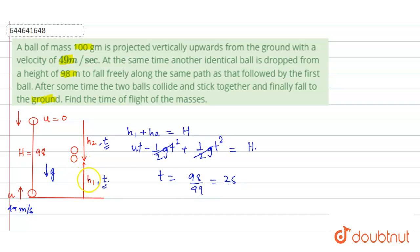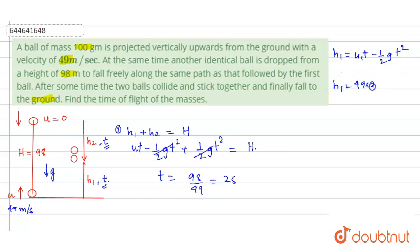Now let us find the height h1 covered by the upward-projected ball. h1 = u·t - ½g·t² = 49 × 2 - 4.9 × 4 = 98 - 19.6 = 78.4 meters. So the collision occurs at a height of 78.4 meters above the ground.